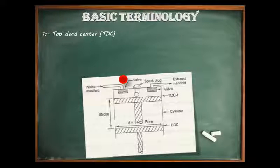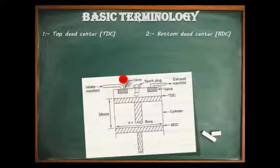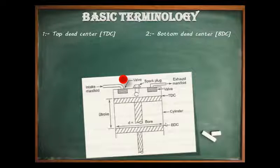The second term is Bottom Dead Center, also known as BDC. BDC is the extreme position reached by the piston at the bottom of the cylinder in a vertical engine. It can also be defined as the position of the crank of a reciprocating engine or pump when the piston is at the bottom of its stroke, as we can see in this figure.